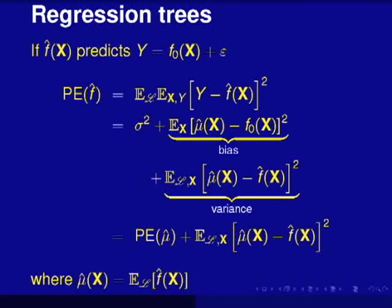Here's the argument. Suppose f-hat is your predictor — you're trying to predict y. It's based on some function you don't know, and there's an error term. Let's compute the generalization error — basically the averaged error. Give me a new x value from a test data set and the y value. How close can you predict that y value? Square it up, average over the test data set, and then average over the training data set that you actually grew f-hat on. It's just averaging the squared distance.